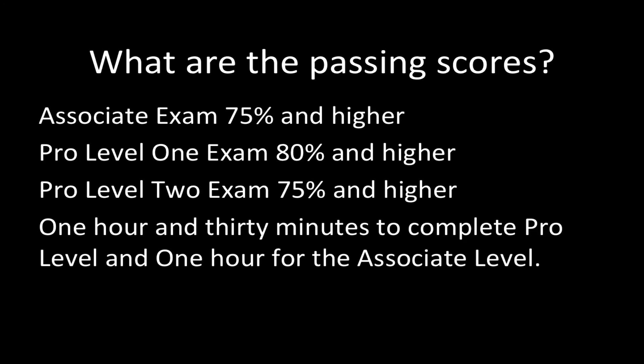What are the passing scores? The Associate exam requires 75% or higher. The Pro Level 1 requires 80%. Pro Level 2 requires 75% or higher, since the content is harder with advanced features. Some questions are unscored, like demographic questions. You have one hour to complete the Associate exam, and 90 minutes to complete Pro Level 1 and Pro Level 2.